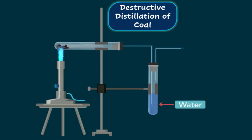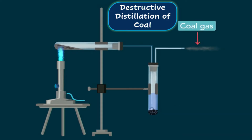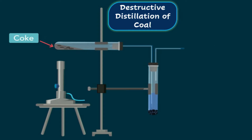What we've done here is taken finely powdered coal in a test tube and heated it. As it breaks down, it produces coke, coal tar and coal gas. Coal tar is collected at the bottom of the other test tube, and coal gas escapes through the side of the test tube. The black residue left in the test tube is coke. So remember: coke is the solid residue, coal tar is in the liquid state and coal gas is in the gaseous state.